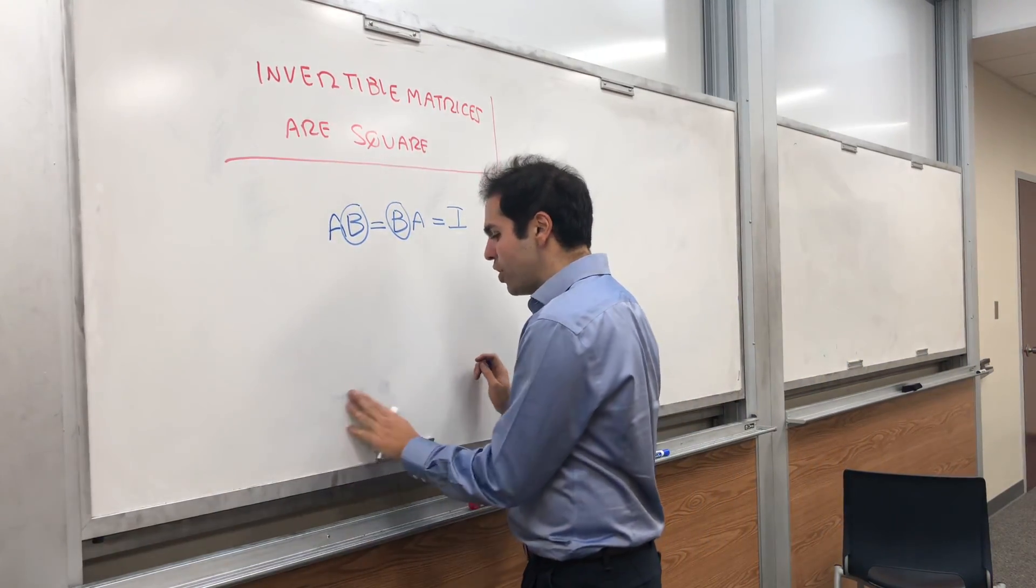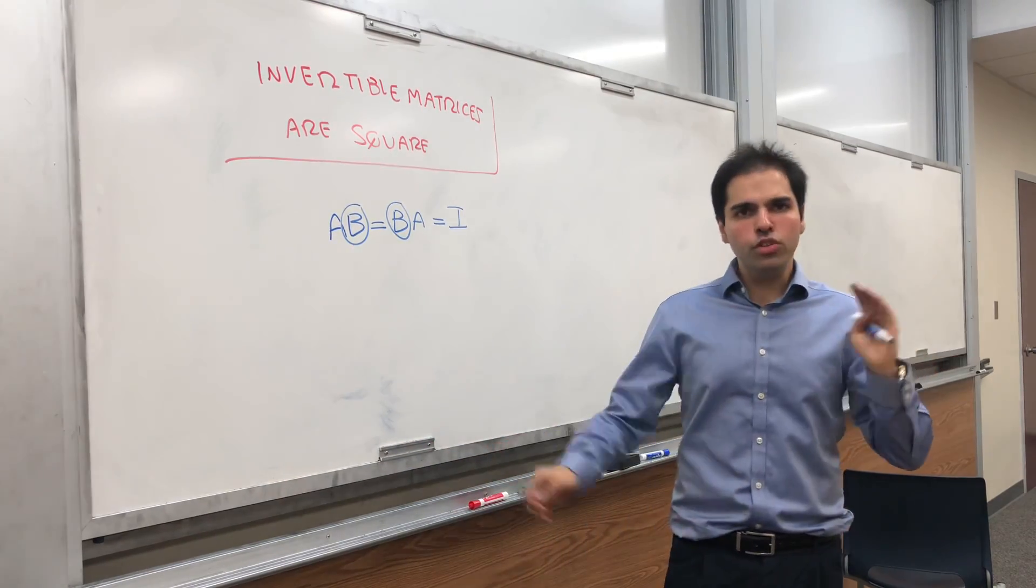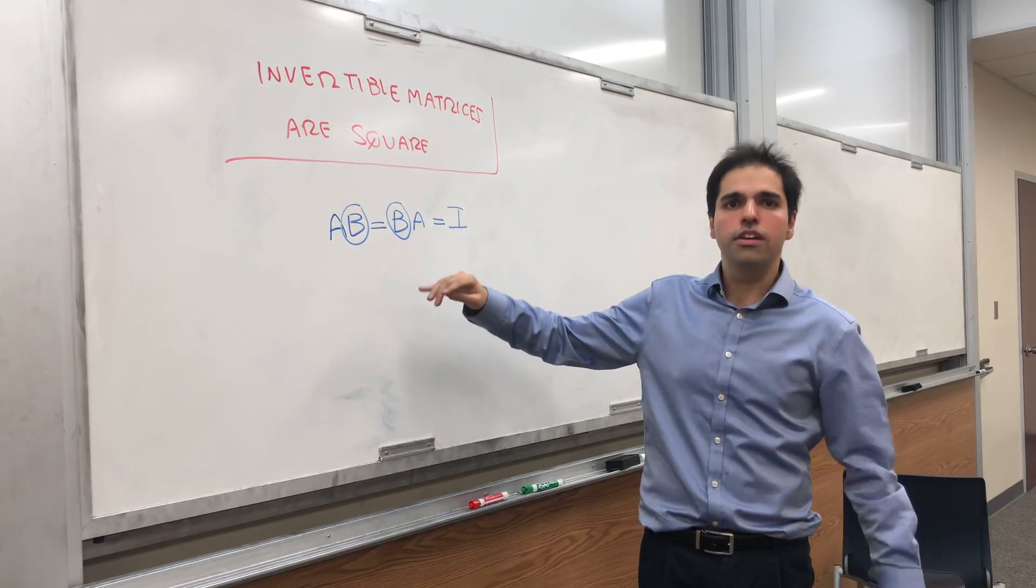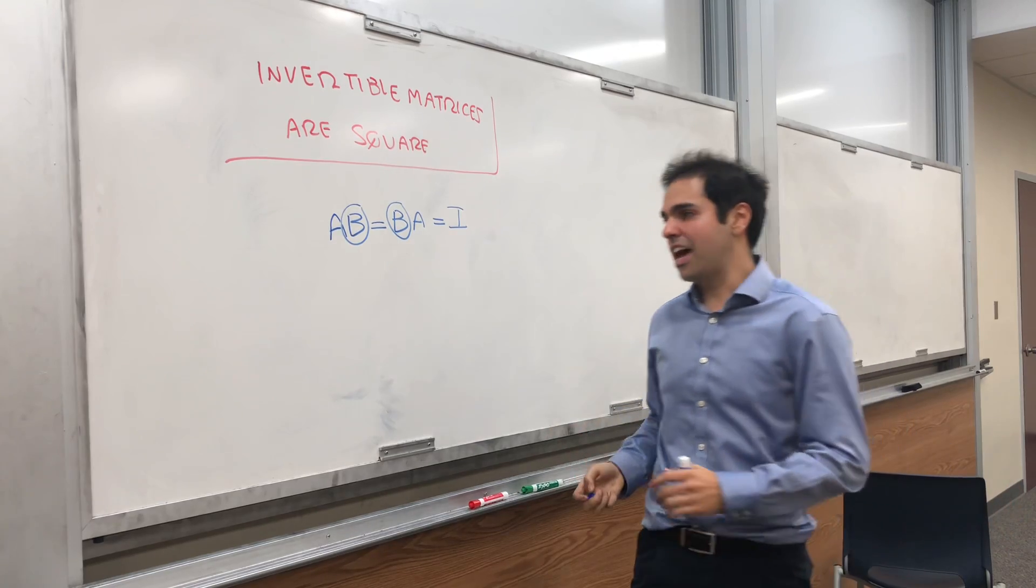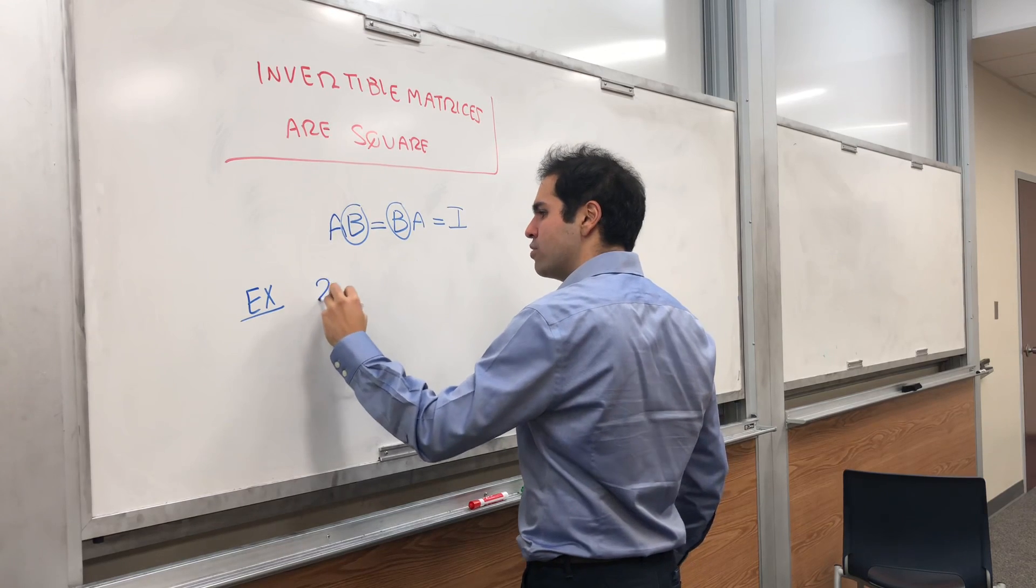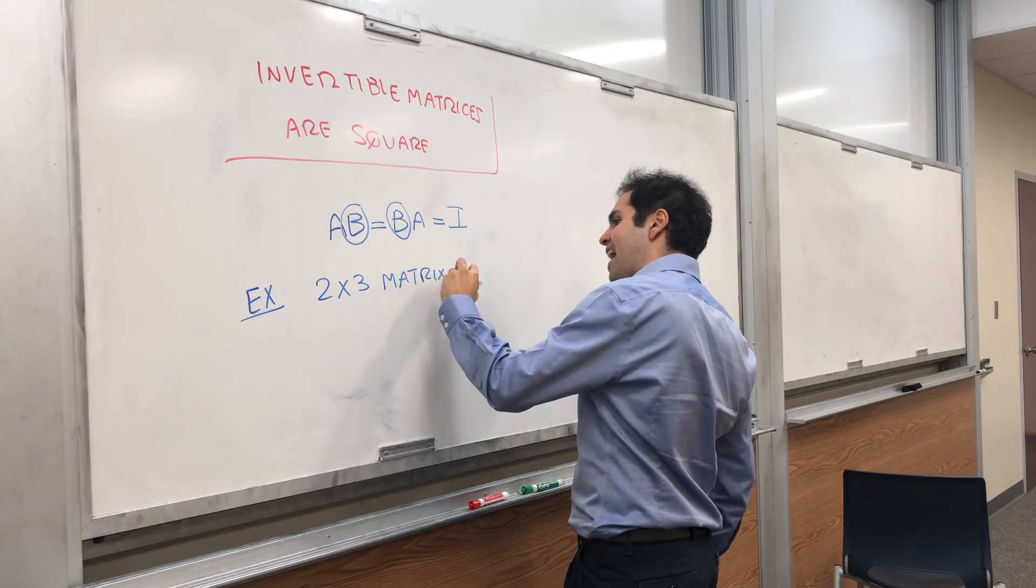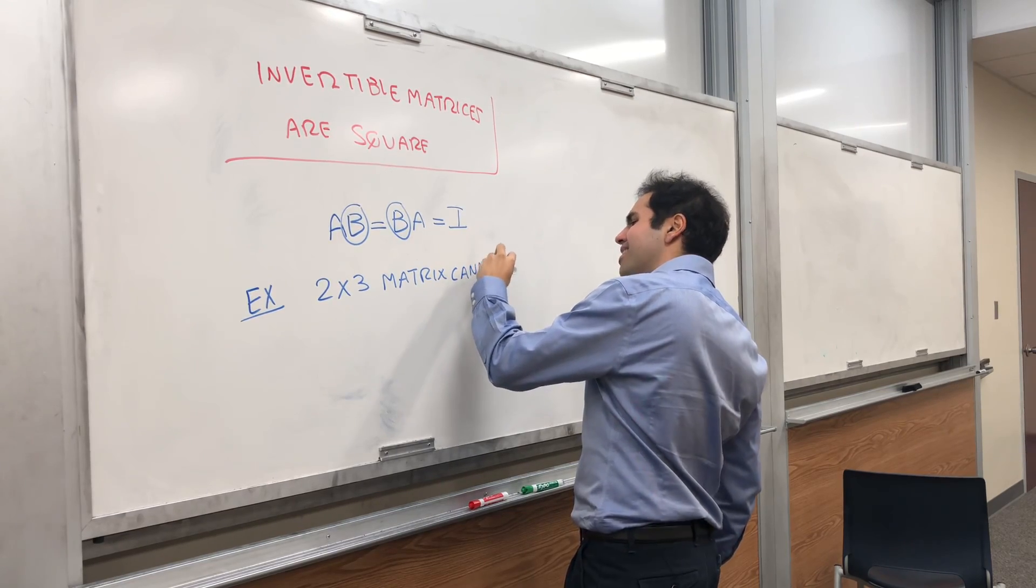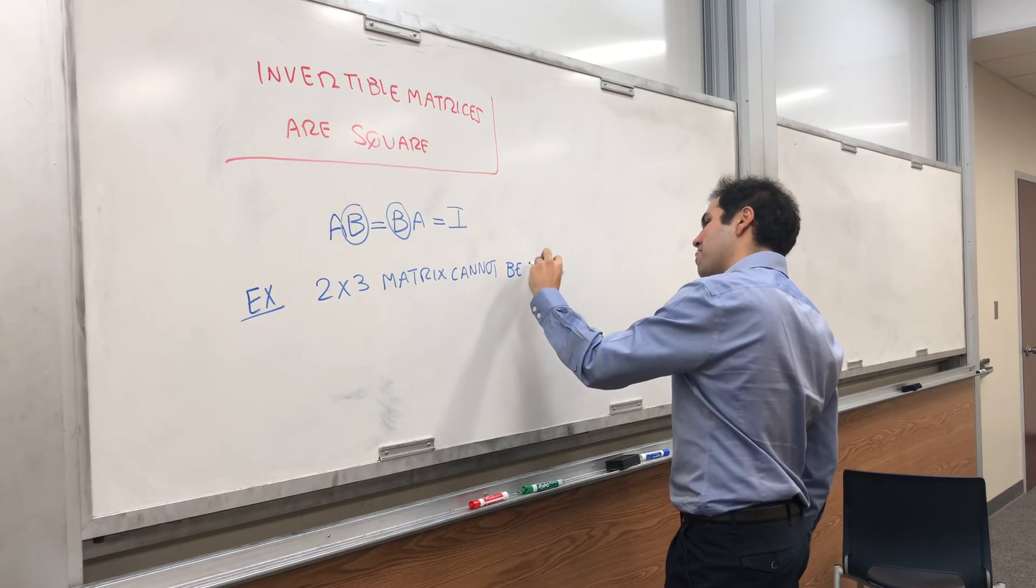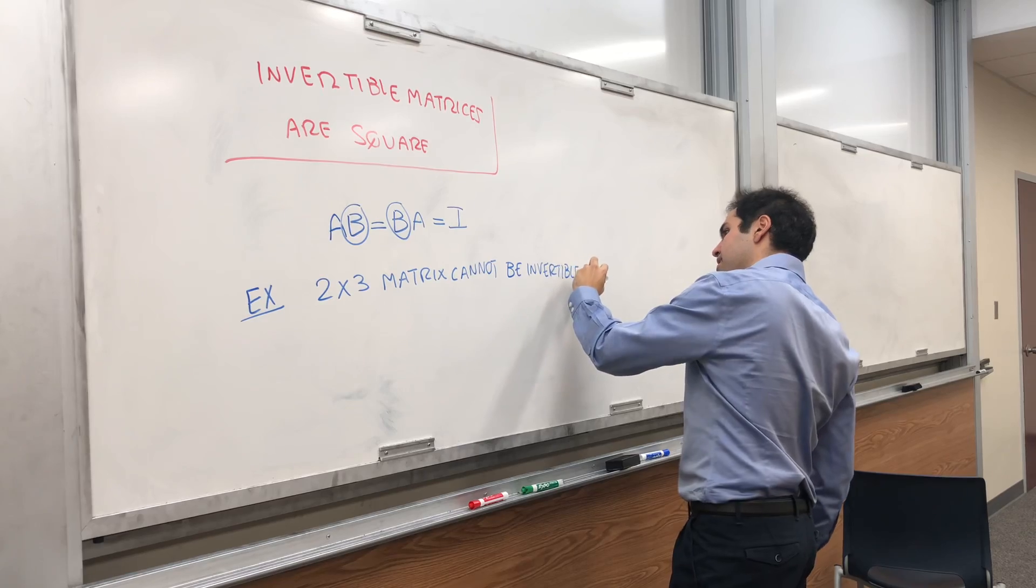Let me show you why invertible matrices must be square, and let me give you two examples of cases where this cannot happen. So let me show you, first of all, that a 2 by 3 matrix cannot be invertible.